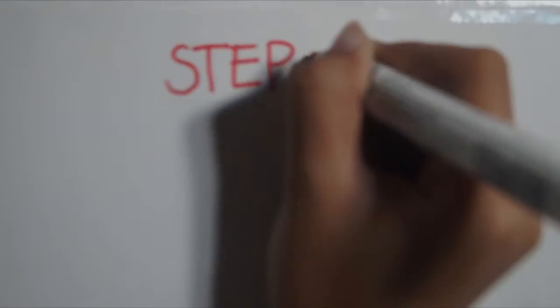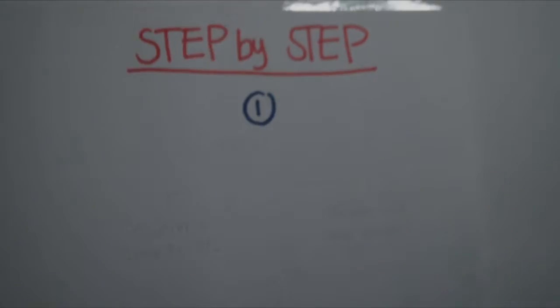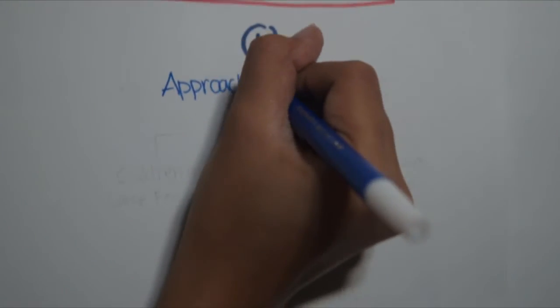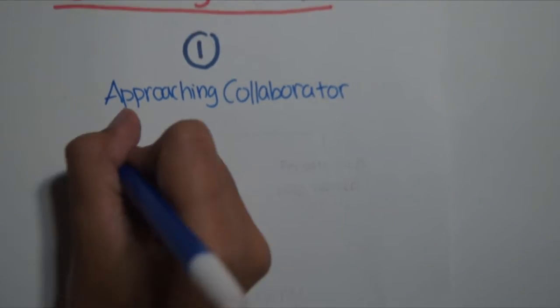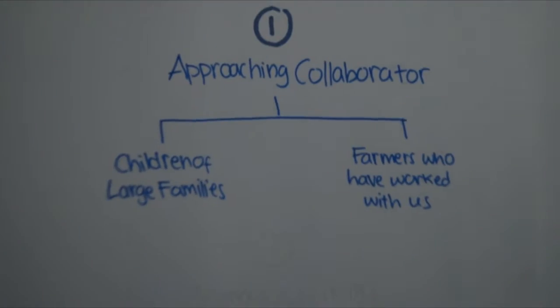Here are the steps we need to take in executing the campaign idea. First is to approach and have agreements with our collaborators, which are children from large families we're going to support, and the buzzer farmers.